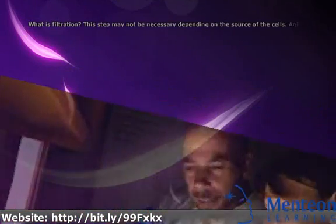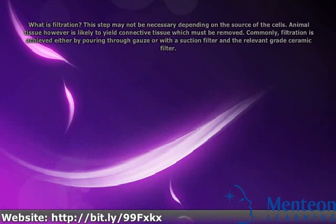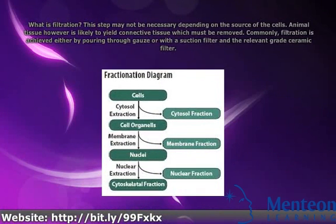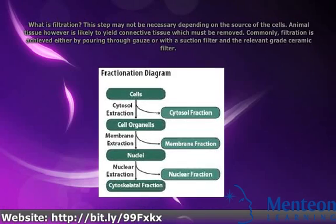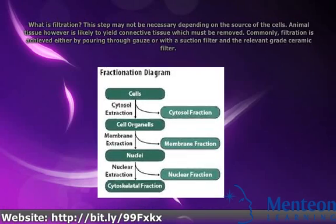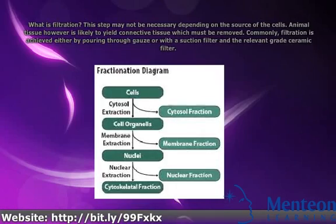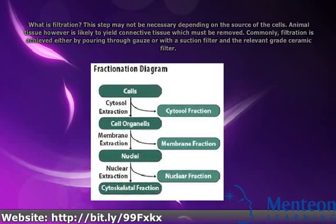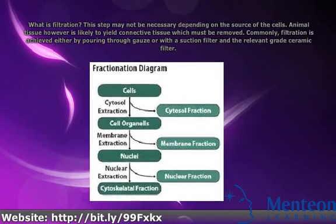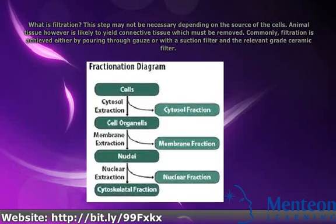What is filtration? This step may not be necessary depending on the source of the cells. Animal tissue, however, is likely to yield connective tissue which must be removed. Commonly, filtration is achieved either by pouring through gauze or with a suction filter and the relevant grade ceramic filter.